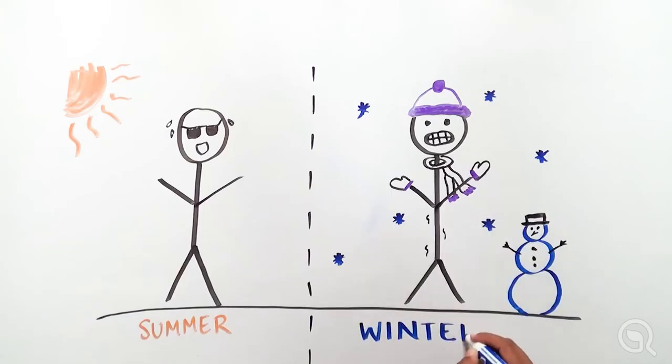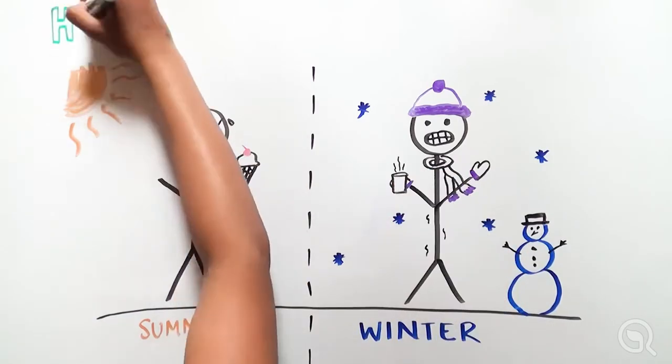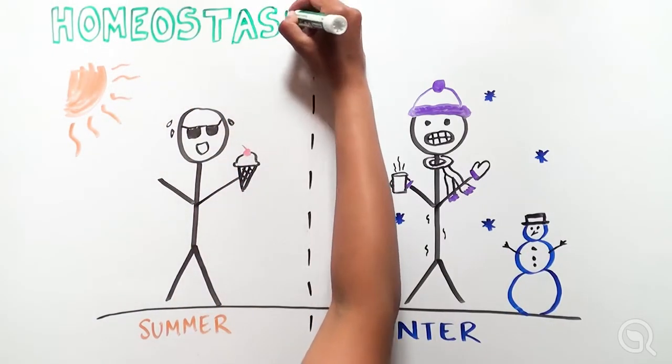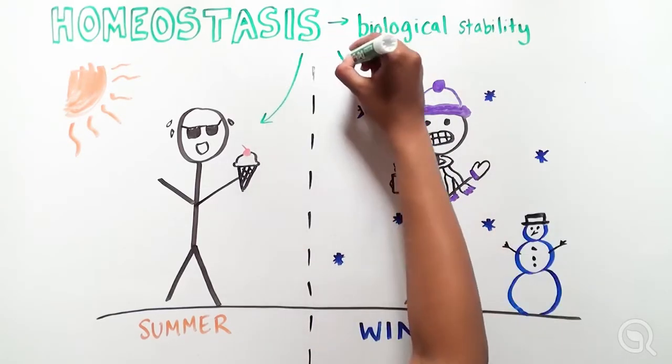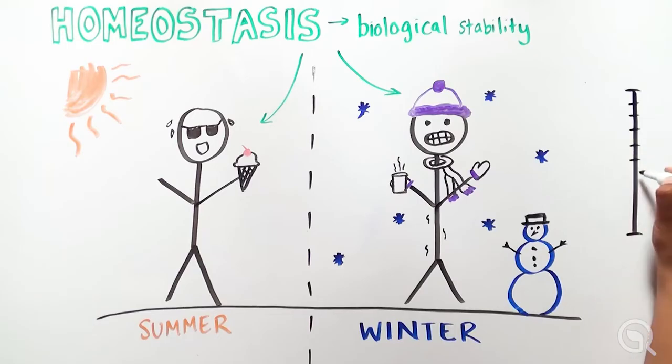our biological systems are able to function normally because of something called homeostasis. Through homeostasis, our bodies achieve optimal internal conditions to maintain biological stability, which is measured in a certain numerical range around a set point.